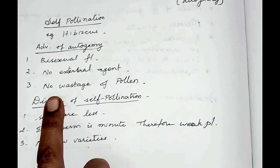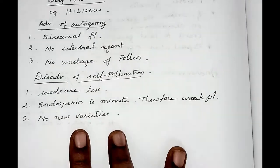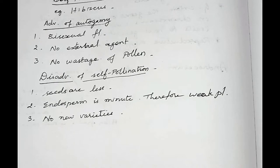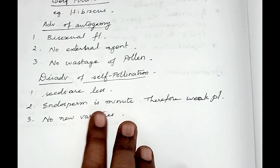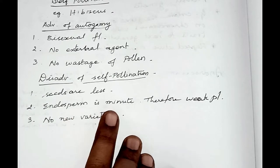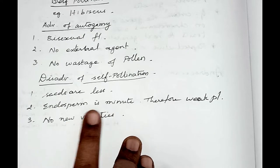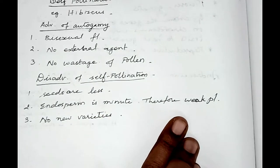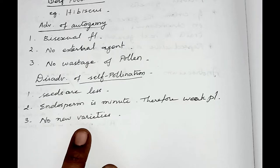There are also certain disadvantages of self-pollination. When plants reproduce by self-pollination, the seeds produced will be very less in number. The endosperm is also minute — that is, the nutritive tissue that provides nutrition for the developing embryo inside the seed is small in self-pollinating flowers. Therefore, they produce weak plants. There is also no formation of new varieties in self-pollination.